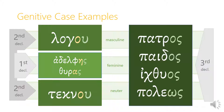The nominative logos becomes lagu in the genitive. Adelfe becomes adelfeis. Thura becomes thuras. Technon in the neuter second declension becomes technu. In the third declension, the stem changes in most cases before we put the os ending on. So pater becomes patros, pais becomes paidos, ithus becomes ichthuos, and polis becomes poleos, where the os ending gets lengthened.